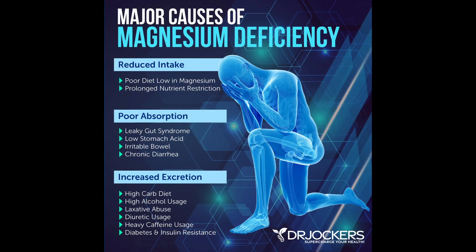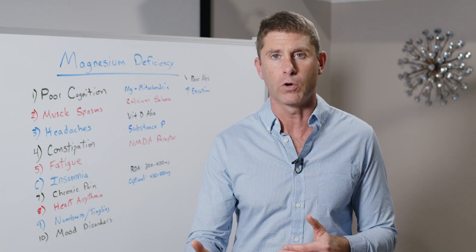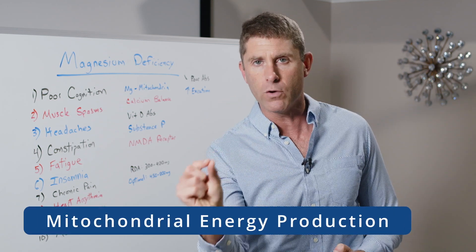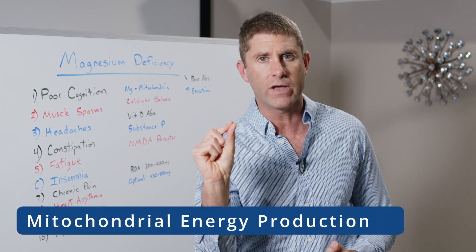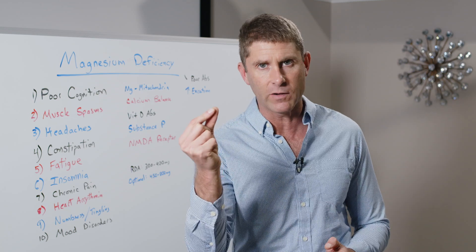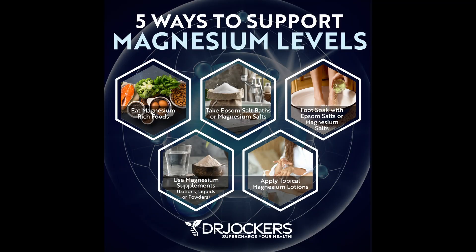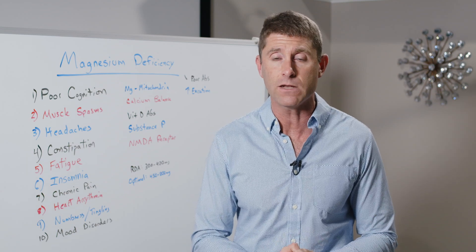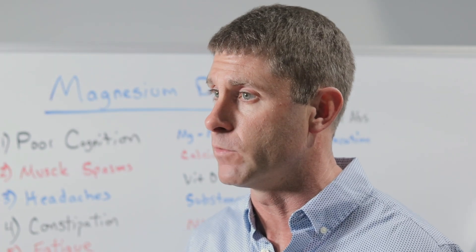Magnesium deficiency is one of the most common deficiencies in our society. Magnesium is to the body what oil is to a car — the more stress we're under, the more we're utilizing magnesium. Magnesium is critical for all mitochondrial energy production. When magnesium levels get too low, it's a rate-limiting step for mitochondrial energy production, reducing cellular energy, detoxification ability, and optimal cell function.